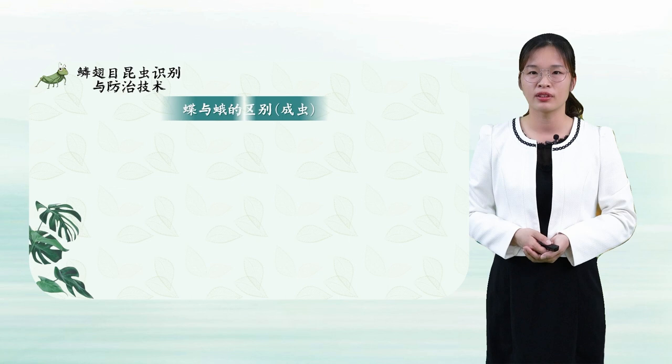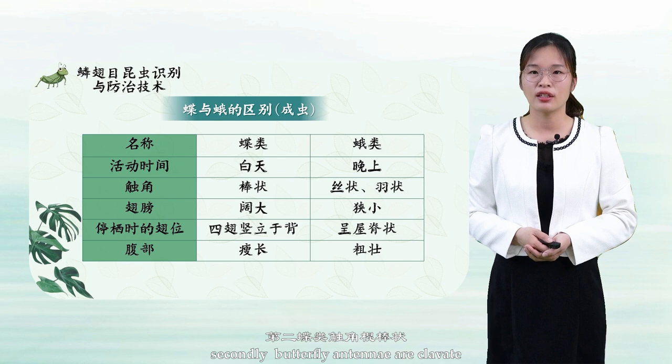The main differences between adult butterflies and moths are as follows. Firstly, butterflies are diurnal, and moths are nocturnal. Secondly, butterfly antennae are clavate, while moth antennae are filamentous plumose, etc.